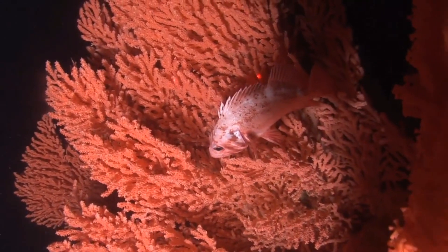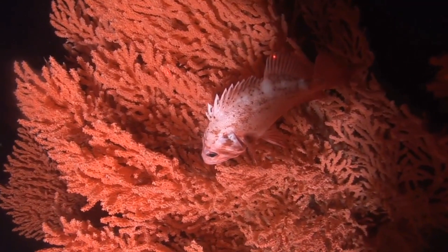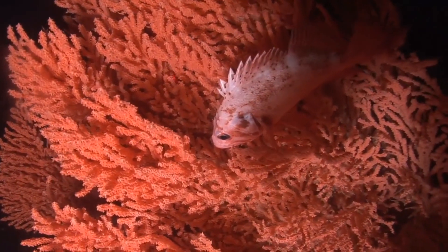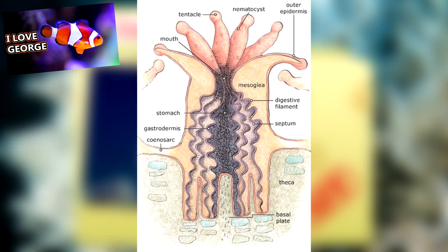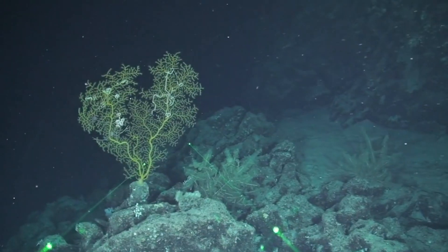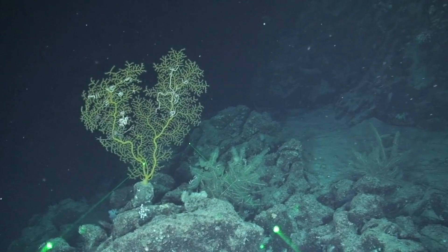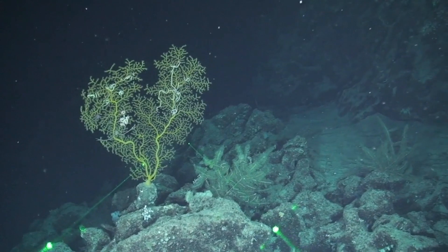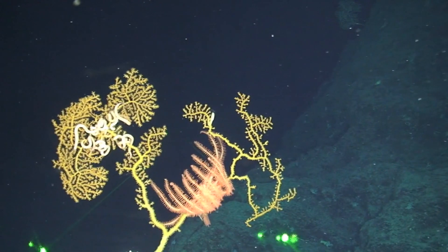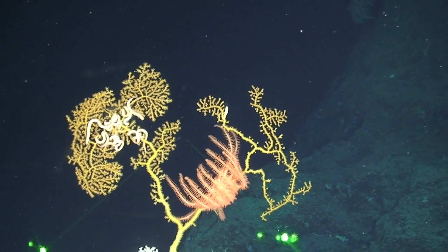Like shallow water coral, the basic form of the deep water coral is a polyp. A polyp looks kind of like a super tiny anemone, or George. They catch planktonic organisms and debris on their outstretched tentacles, which is then transported to the mouth and consumed.